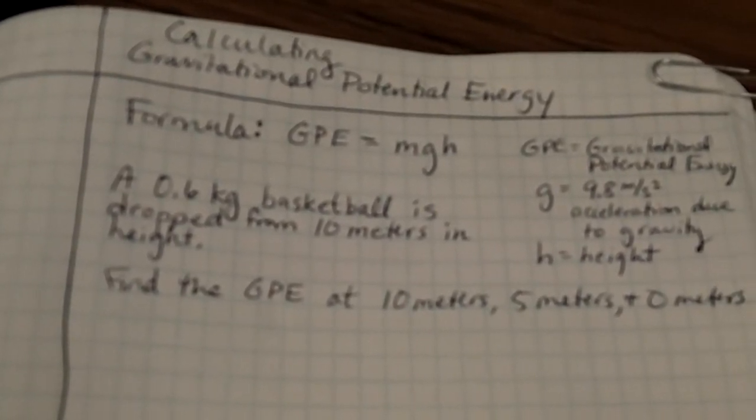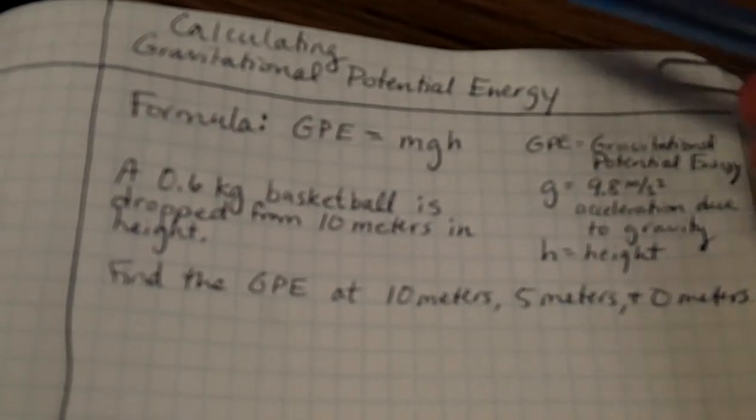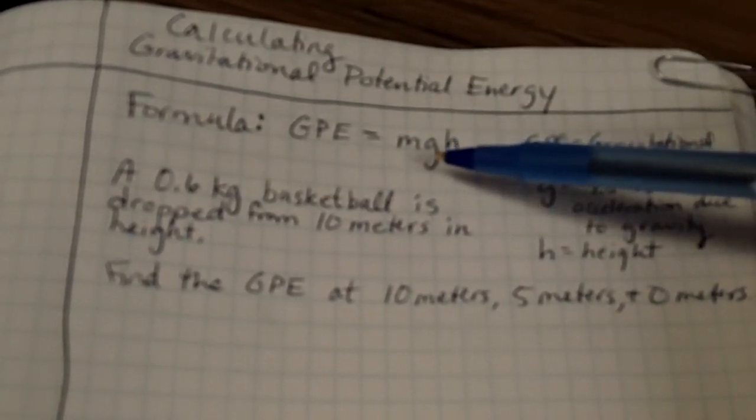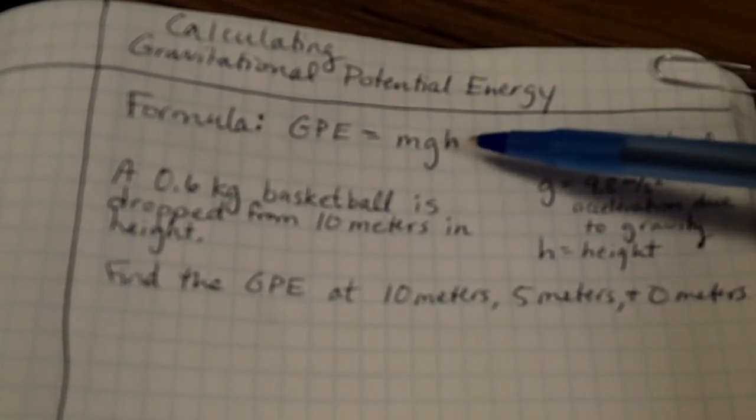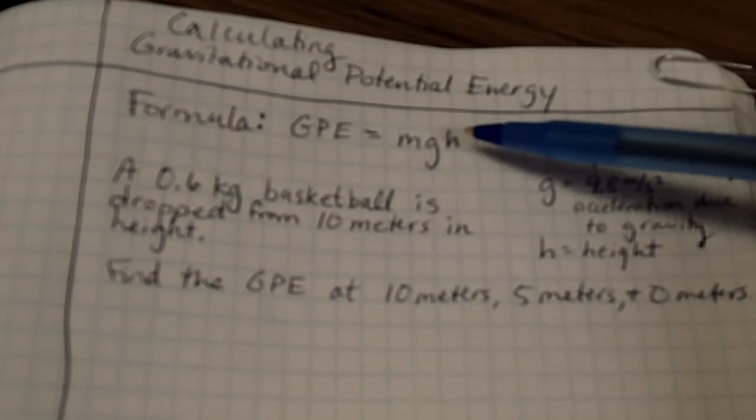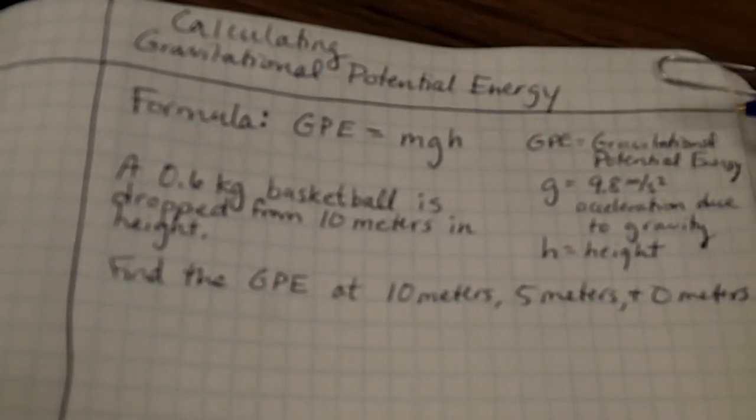So we have a formula which is GPE equals mass times the gravitational constant and H. So that's GPE equals MGH. Now what does that MGH stand for?